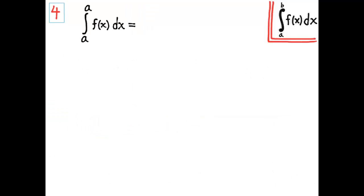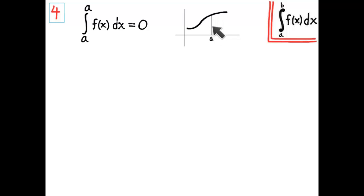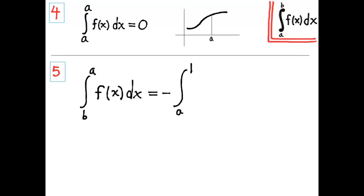Property four: the integral from a to a of f of x dx is zero. The integral from a to a is the area of a zero-width region — it has no width, so its area is zero. Property five says that the integral from b to a of f of x dx is the opposite of the integral from a to b. If I reverse a and b, it's the same as multiplying by negative one, simply because the sign of dx switches.